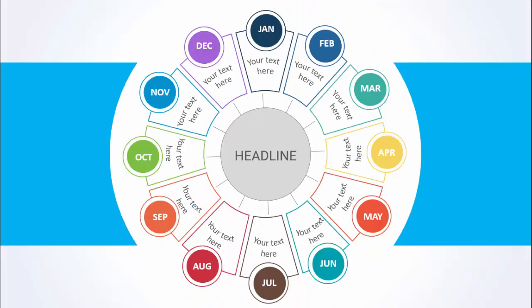In today's tutorial I'm going to show you how to create a 12-options infographic slide in PowerPoint. I've added 12 options here and put the name of each month starting from January till December. You can add text for each month and add the main title or headline. I've also created another design where I've replaced the months with numbers — depending on your requirement you can change the text.